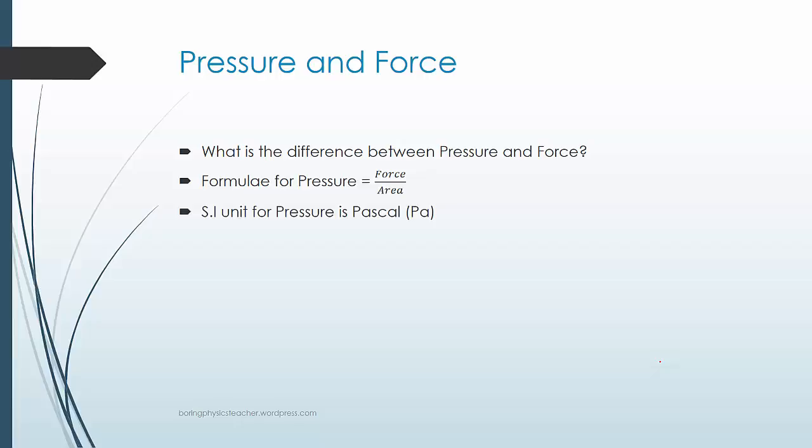The SI unit for pressure is Pascal, contrasted with the SI unit for force, which is Newton. The base unit is actually Newton per meter squared. Newton is force and area is meter squared. So that's how it comes about.